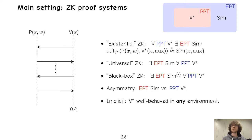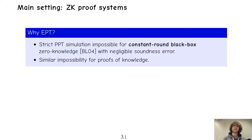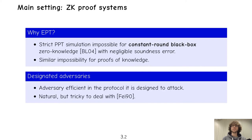So why do we want to look at expected time simulation? The main reason is that strict polytime simulation is impossible in the plain model for constant-round black-box zero-knowledge with negligible soundness error, which is a result due to Barak and Lindell. They also show that similar impossibilities hold for proofs of knowledge. The relaxation to designated adversaries — which only need to be efficient in the protocol they are designed to attack — is very natural in the expected polytime setting.